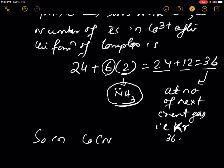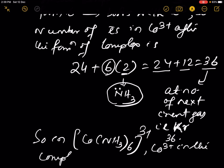So in [Co(NH3)6]3+, the Co3+ in the complex has the electronic configuration of krypton gas. Thank you.